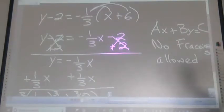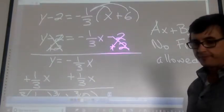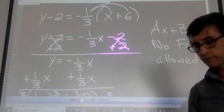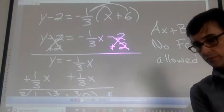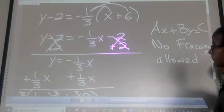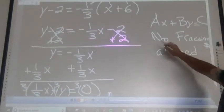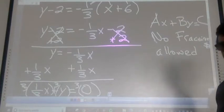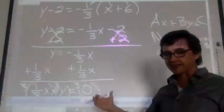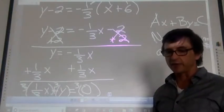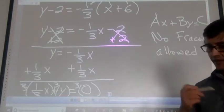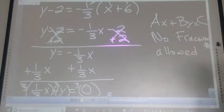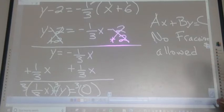A student asks why we multiply by 3. The answer: no fractions allowed in standard form. That's why we multiply by 3 — to eliminate the fraction. Those are great clarifying questions because someone else is probably wondering the same thing.